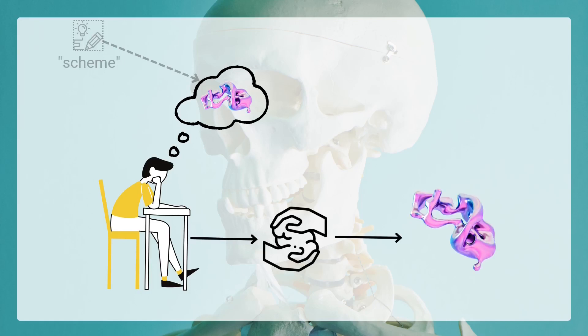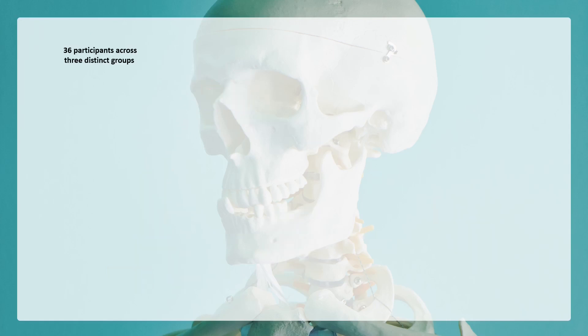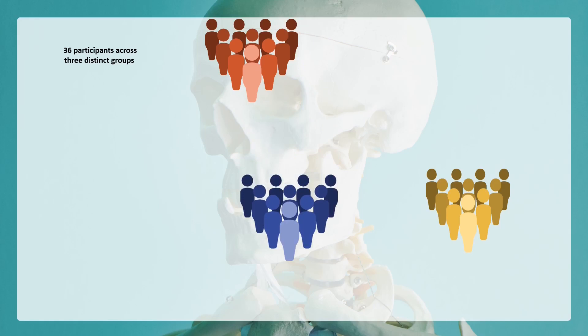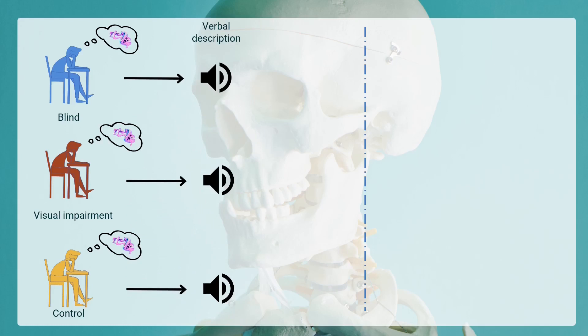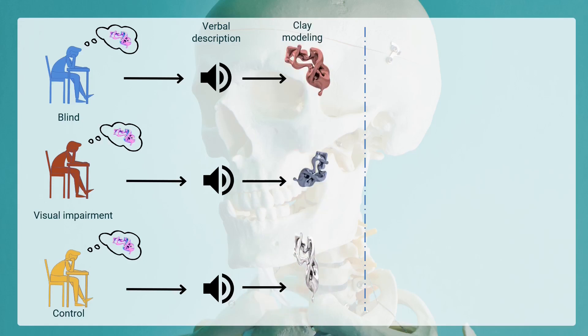Our hypothesis is that clay modeling allows students to reconstruct the geometrical shape they can imagine, which can be considered as the geometrical mental representation of their understanding. To test this hypothesis, we designed a comparative study between three groups: blind, visually impaired, and a control group. In the first phase, we start with a verbal description of an anatomical concept, prompting each participant to shape this concept into a clay model. This method bridges the gap between abstract verbal information and concrete geometric understanding.